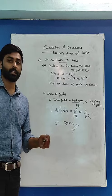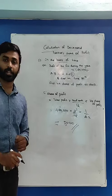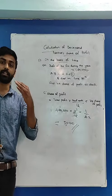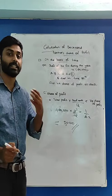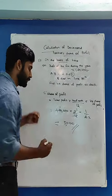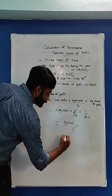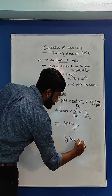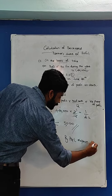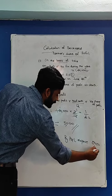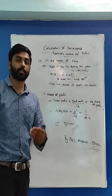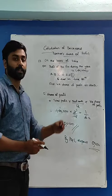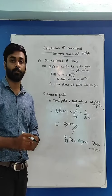This is how we can calculate C's share of profit. This amount will be recorded on the credit side of the deceased partner's capital account by P&L suspense account — amount 5,000. This will be recorded in the deceased partner's capital account. This is the first method for calculating the share of profit of the deceased partner.